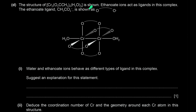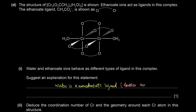In the structure shown, water and ethanoate ions behave as different types of ligands. Each water molecule's oxygen donates one lone pair, whereas each ethanoate ion donates two lone pairs of electrons. So water is a monodentate ligand — it donates one lone pair — whereas ethanoate is a bidentate ligand, donating two lone pairs.